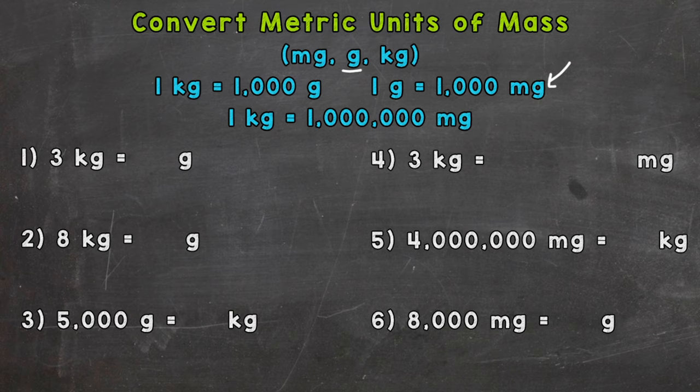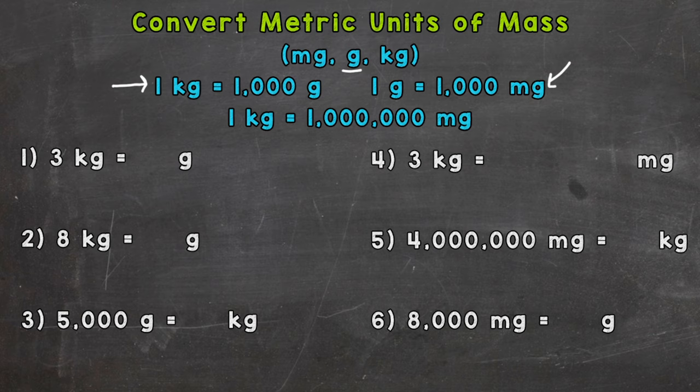Next, we talked about our base unit gram. For a point of reference, a gram is about a paperclip or stick of gum. And then kilogram — we have the prefix kilo, which means one thousand. So it takes one thousand grams to equal one kilogram. A kilogram is a little over two pounds, so about the mass of a textbook. One last note: one kilogram equals a million milligrams.